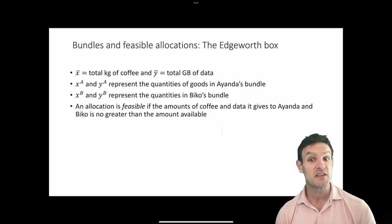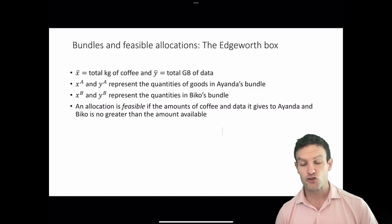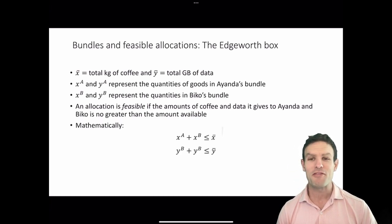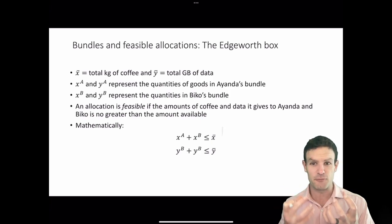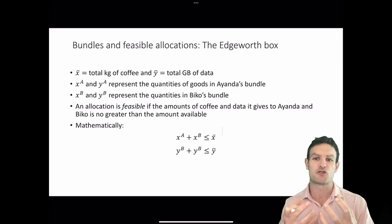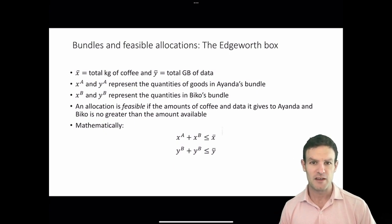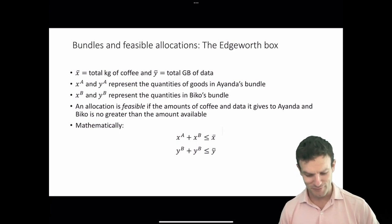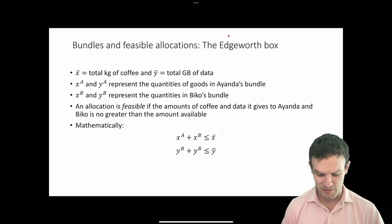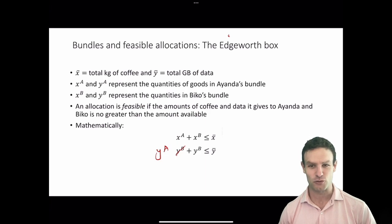We say that an allocation is feasible — it's possible — if the amount of coffee and data it gives to Ianda and Biko is no greater than the amount available. With the two goods x and y, that means xa plus xb has to be less than or equal to x-bar, the total amount of x available. Similarly for y, ya plus yb must be less than or equal to y-bar.